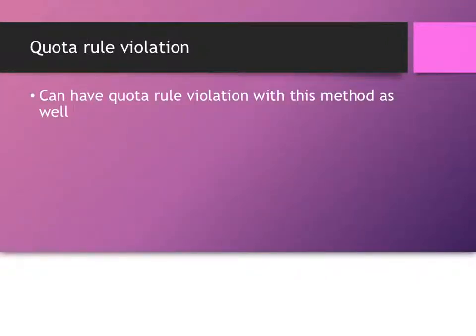Now, I mentioned this in the very beginning, but I do want to say you can get quota rule violations with this method as well. Although, because of the standard rounding and the fact that usually the divisor you choose is pretty close to the standard divisor, you tend not to get them as much as the other two methods. The other two, you know, manipulating with divisor methods. So, Jefferson's method, Adams' method, and Webster's method can all lead to quota rule violations. Although, Webster's method is kind of the least likely to do so.